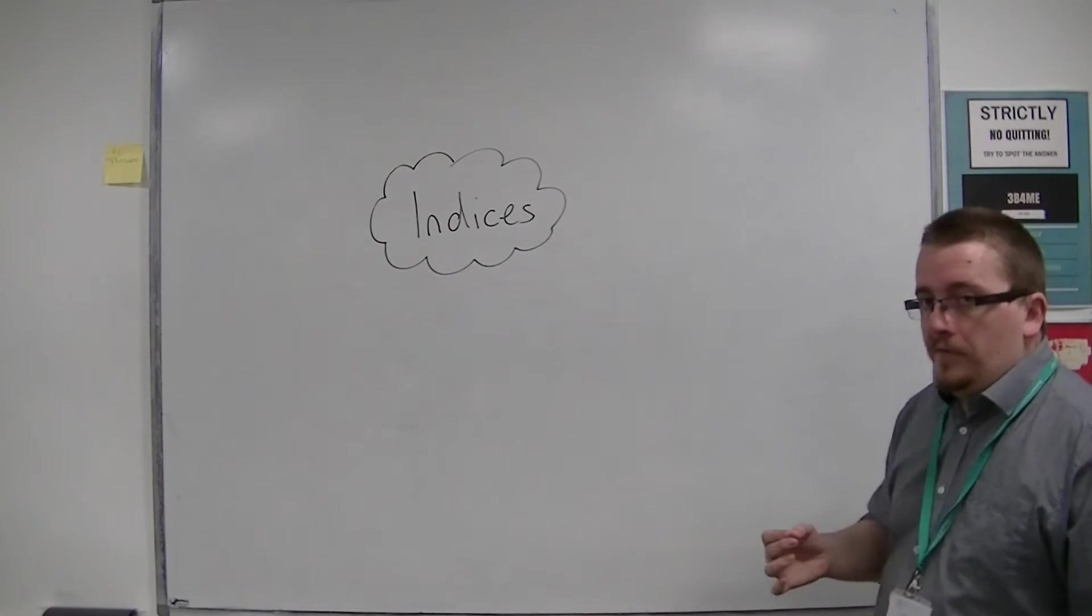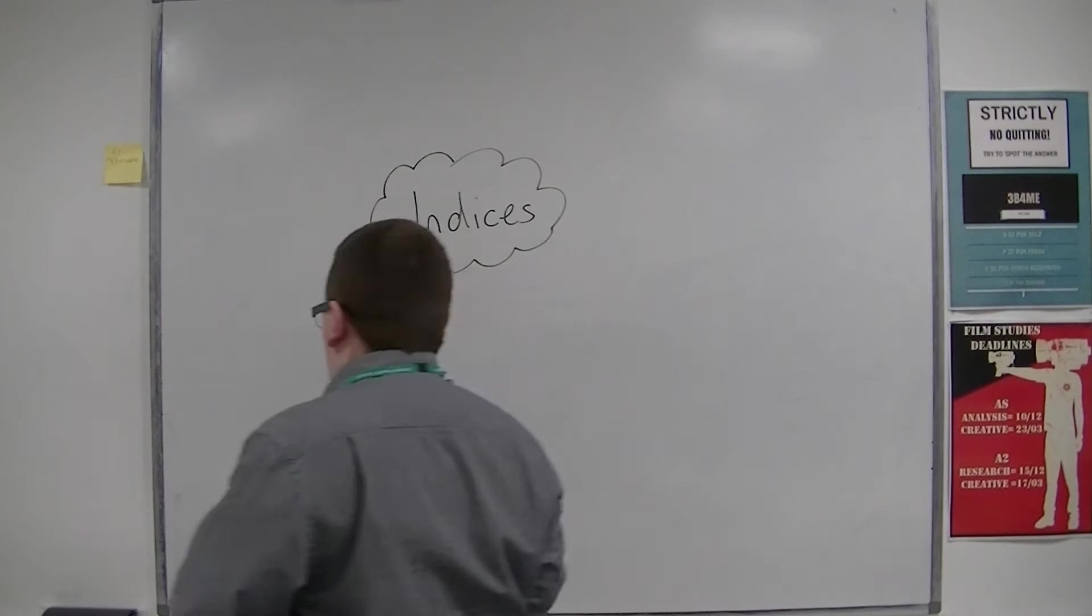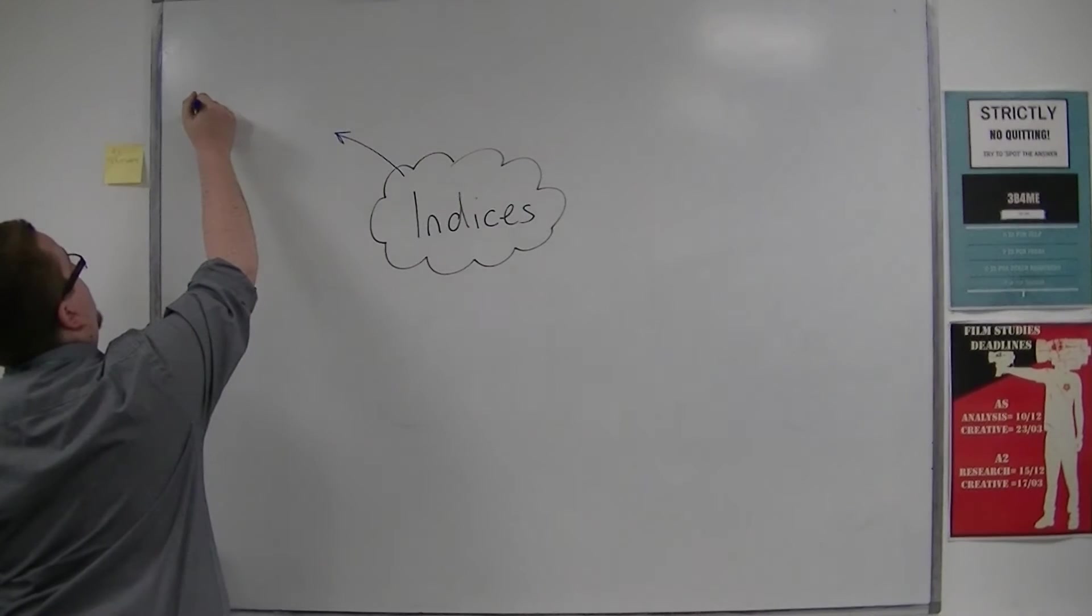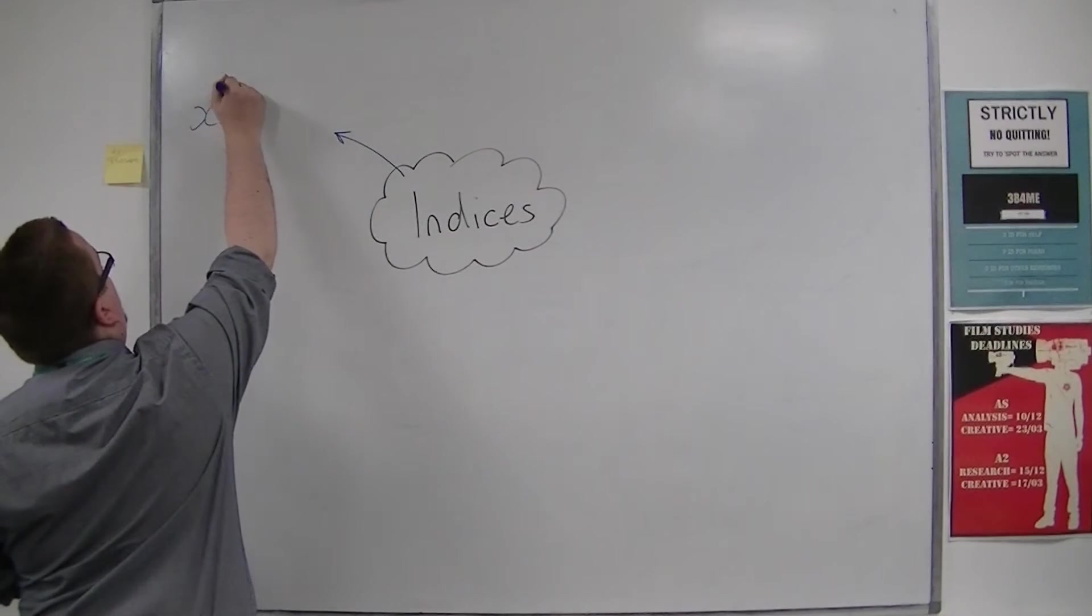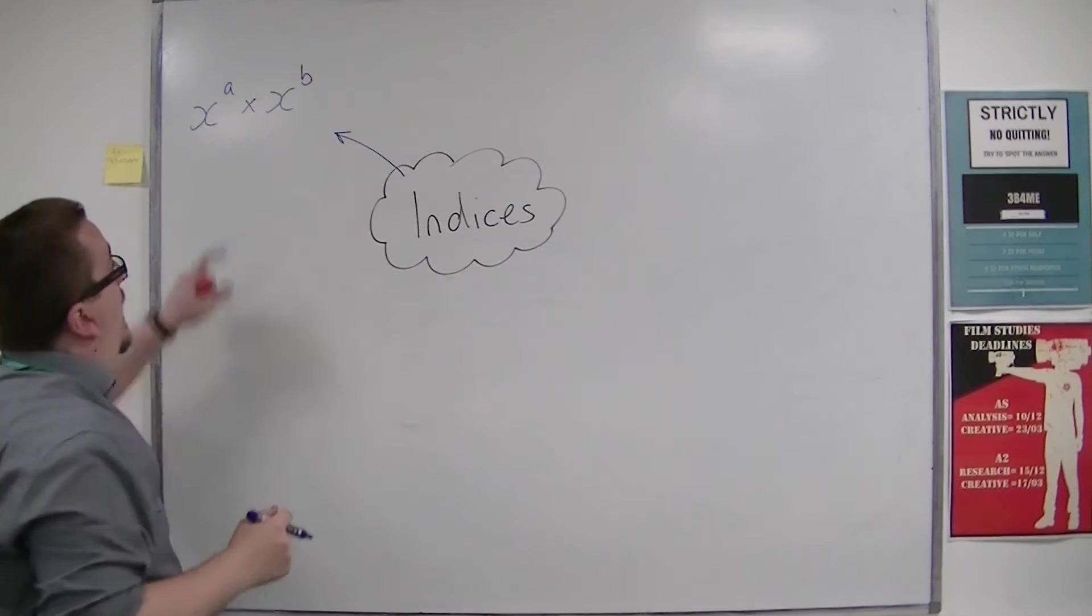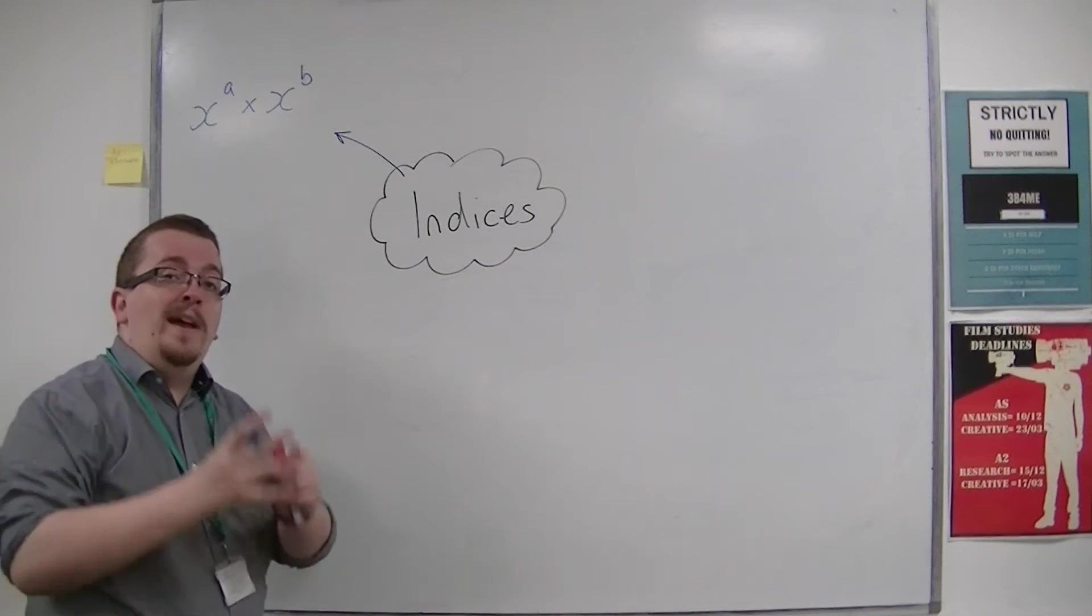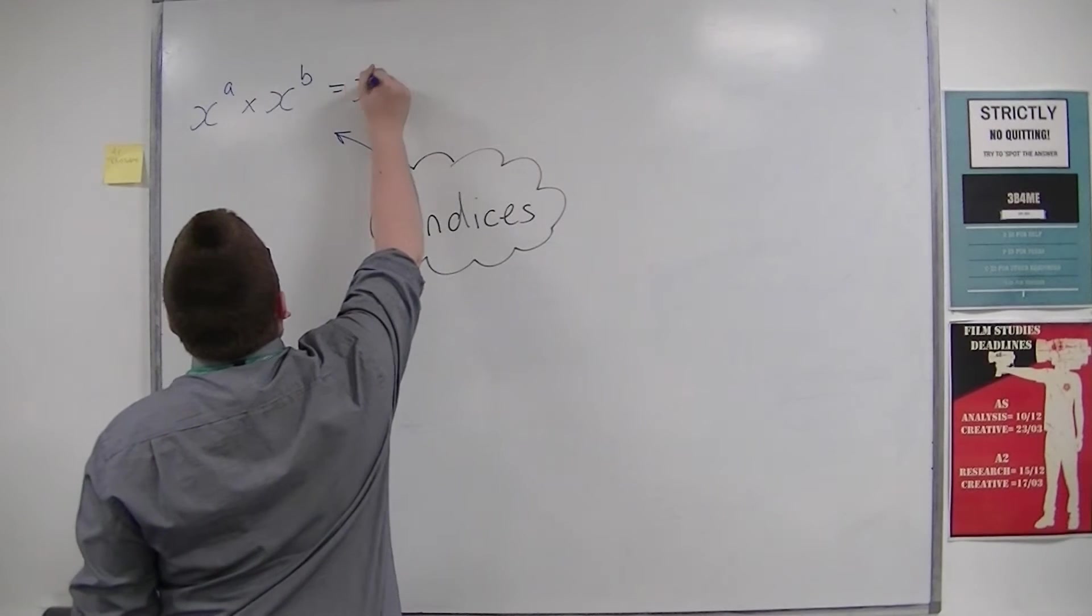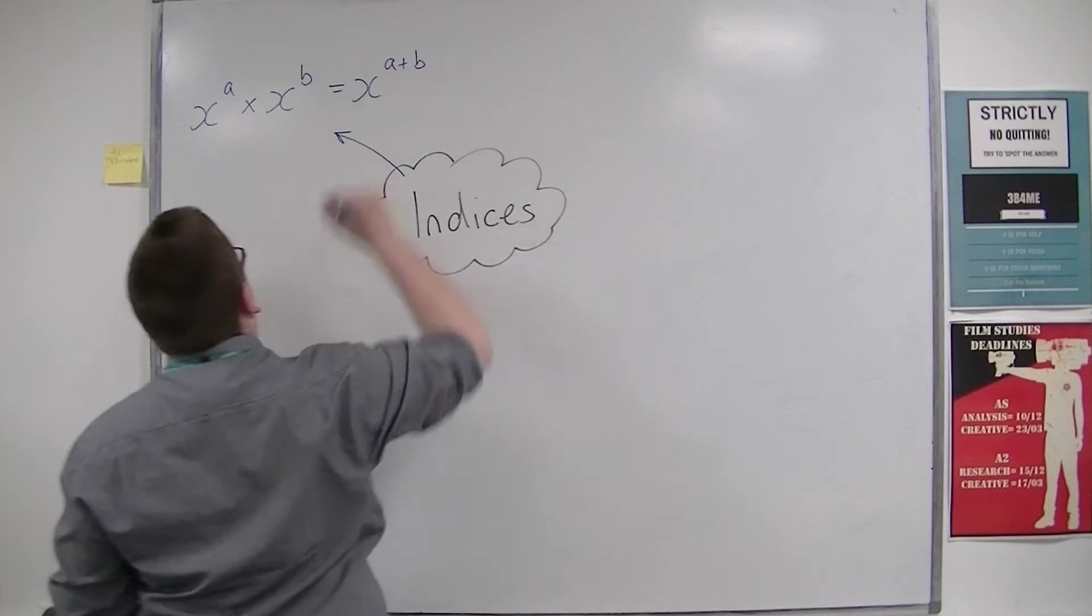First of all, if you multiply with the same base number, so x to the power of a times x to the power of b, where x is the base number, then this is x to the power of a plus b.